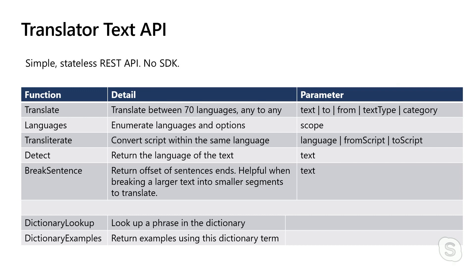The next function is the Languages function — it's an enumeration that tells you which languages you can translate between. It also gives you the friendly name of the language so you can render it in your UI. Not all languages support transliteration, which is the next function. Transliteration changes the script of a piece of text — for example between a native script and the romanized script, such as for Arabic or Chinese. It makes text readable for people who don't read the native characters. It's really good for language learning scenarios.